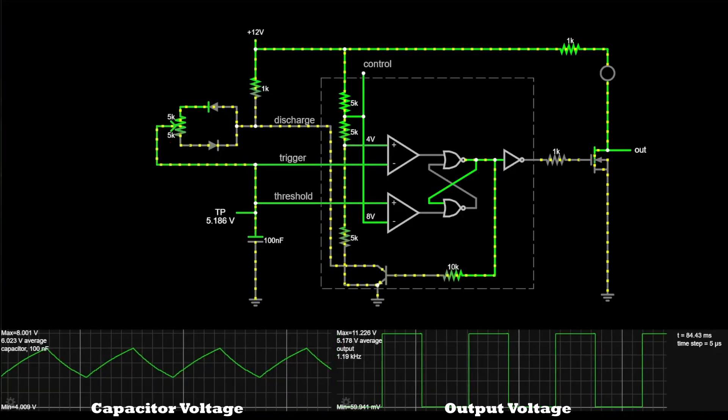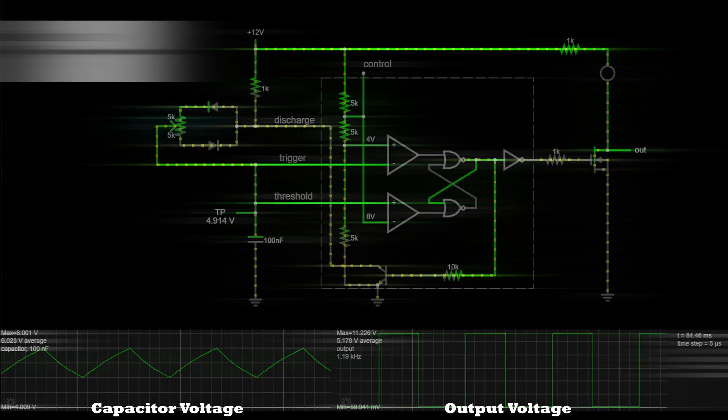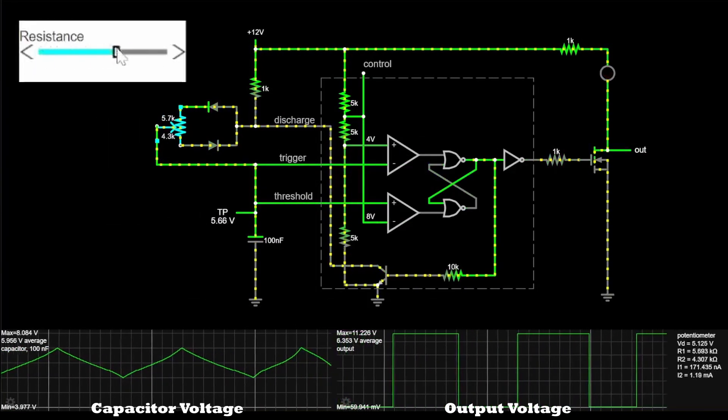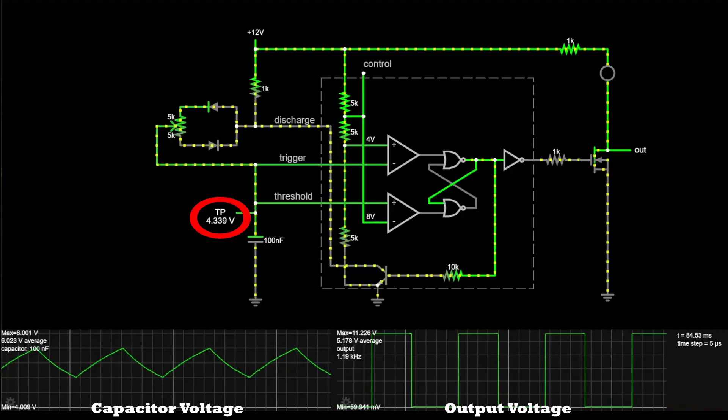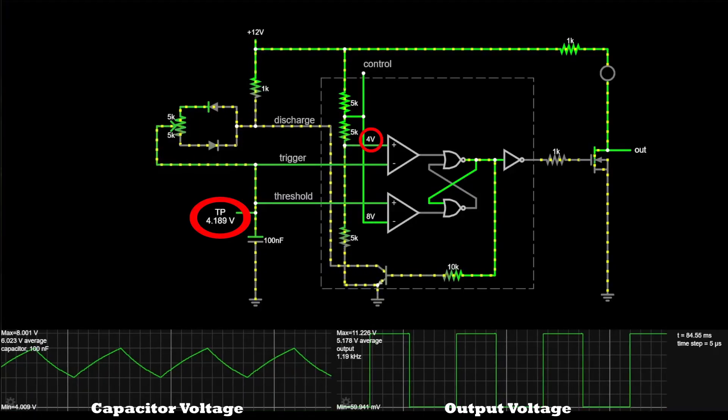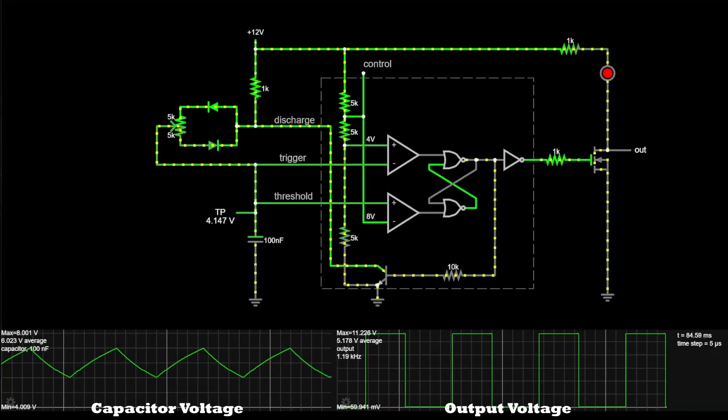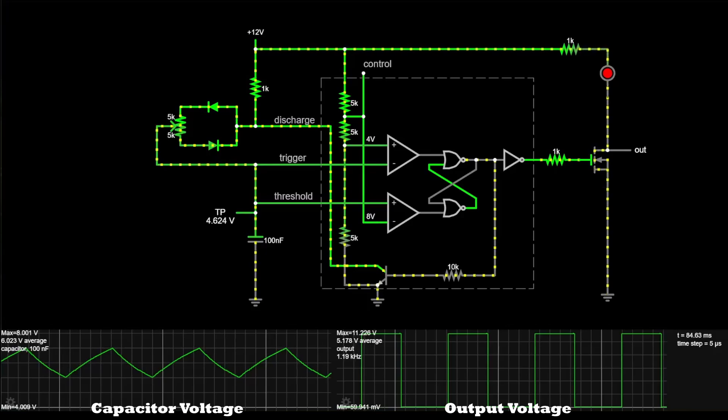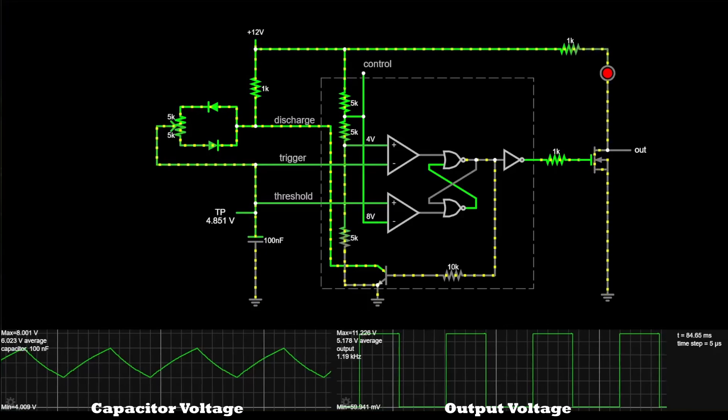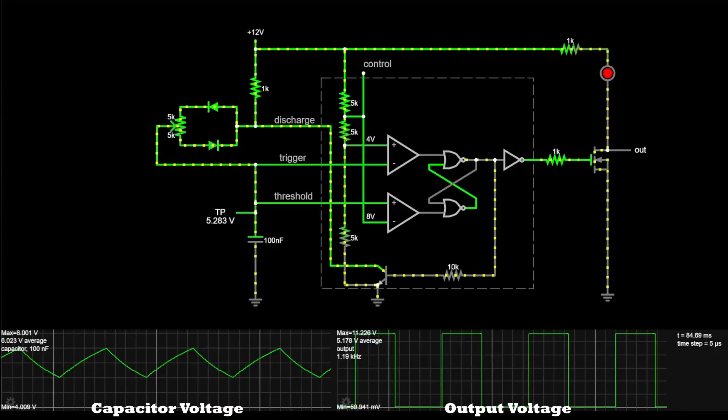Therefore, the two diodes in this configuration provide a way to have different charge and discharge times for the capacitor according to the resistance set by the potentiometer. The capacitor continues to discharge until it reaches 4 volts, which is one-third of the supply voltage. That completes one full cycle of the oscillation. This process of charging and discharging the capacitor repeats indefinitely, switching the output between high and low states.